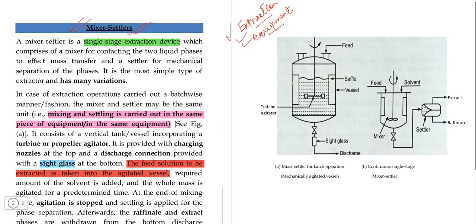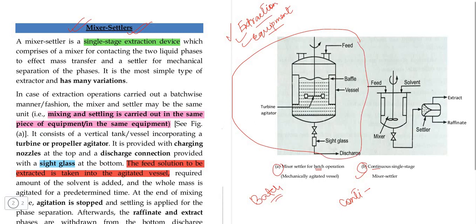This is diagram A and B. If we are going to talk about batch process, we will continue the batch process. Mixer Settlers is a single-stage extraction device. This is the single-stage extraction device — this is the unit.